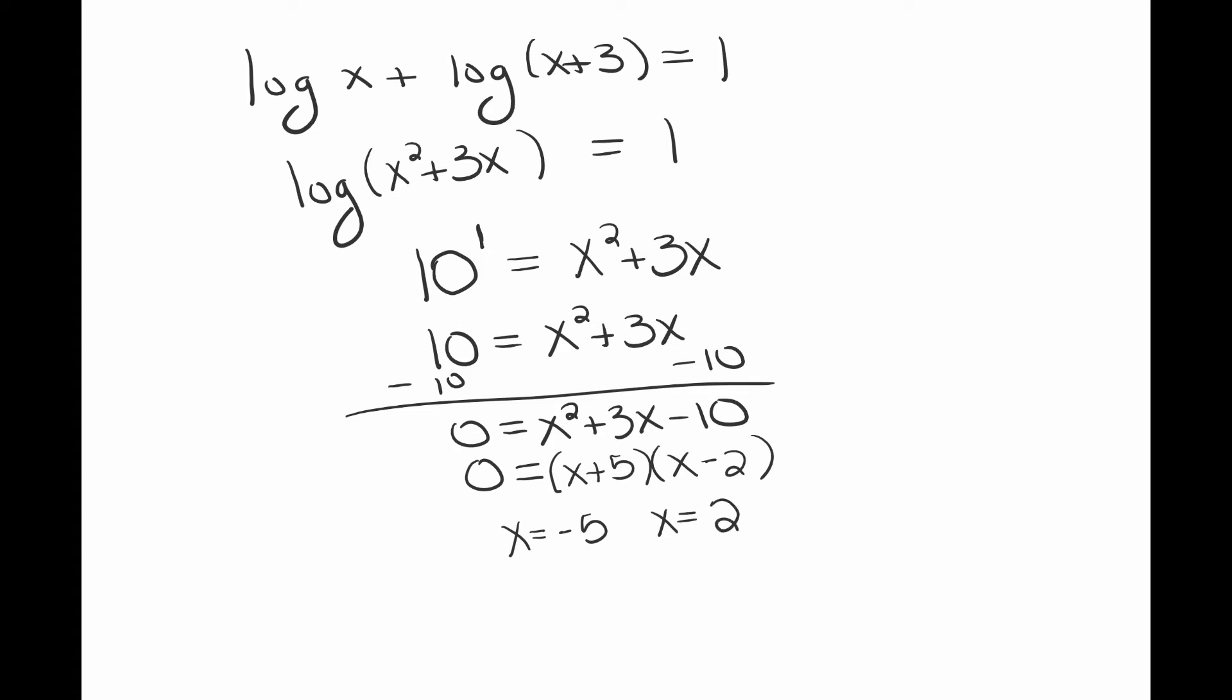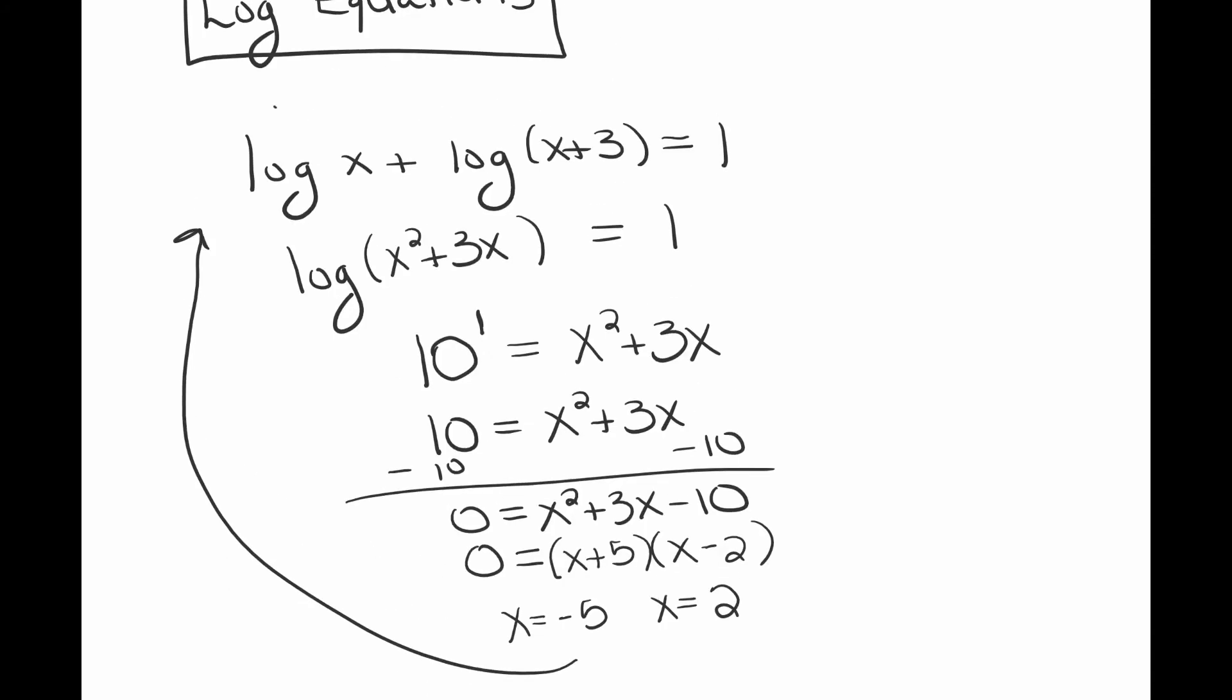Now anytime you have your answers with a logarithmic equation, you want to go back and make sure it makes sense, make sure that it doesn't cause an error. If you ever take the log of a negative number, you're going to get an error in your calculator. If you notice, when you put in negative 5 in the original equation, you're going to be taking the log of a negative. So if I plug in negative 5 for x, it's going to turn into log of negative 5, which automatically tells you that this is not going to work. So we have to exclude this answer as one of our solutions.